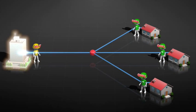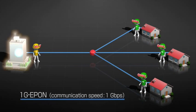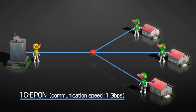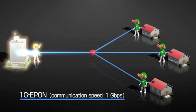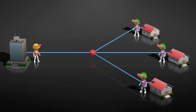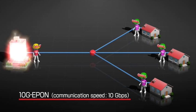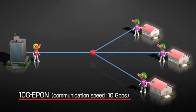Today, the optical access service for detached houses uses 1G EEPON, which sends data at 1 gigabit per second. The new 10G EEPON raises the speed by a factor of 10 to 10 gigabits per second.